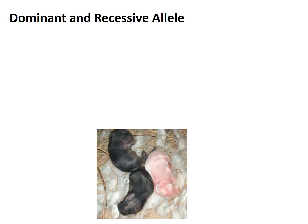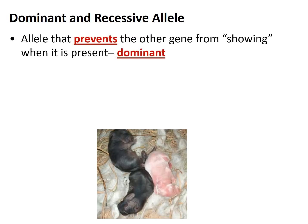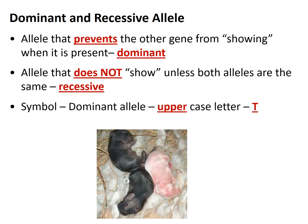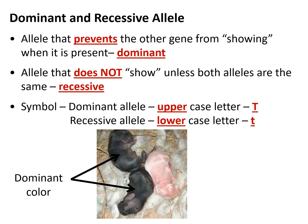When we look at alleles we often talk about them being dominant or recessive. If one allele prevents the other from showing, we say that it's dominant. When an allele does not show unless both alleles are the same, we say that it's recessive. If the allele is dominant, we represent it with an uppercase letter — in this example, capital T. If it's recessive, we use a lowercase letter, lowercase t. Looking at this litter of puppies, the two black puppies are showing the dominant trait, and the white one has the recessive trait.